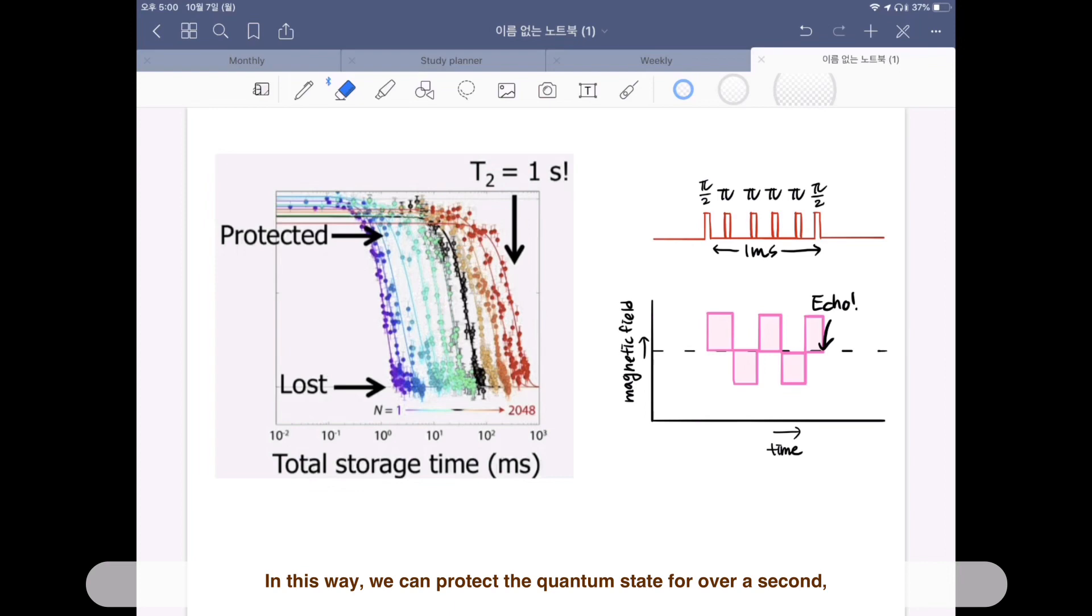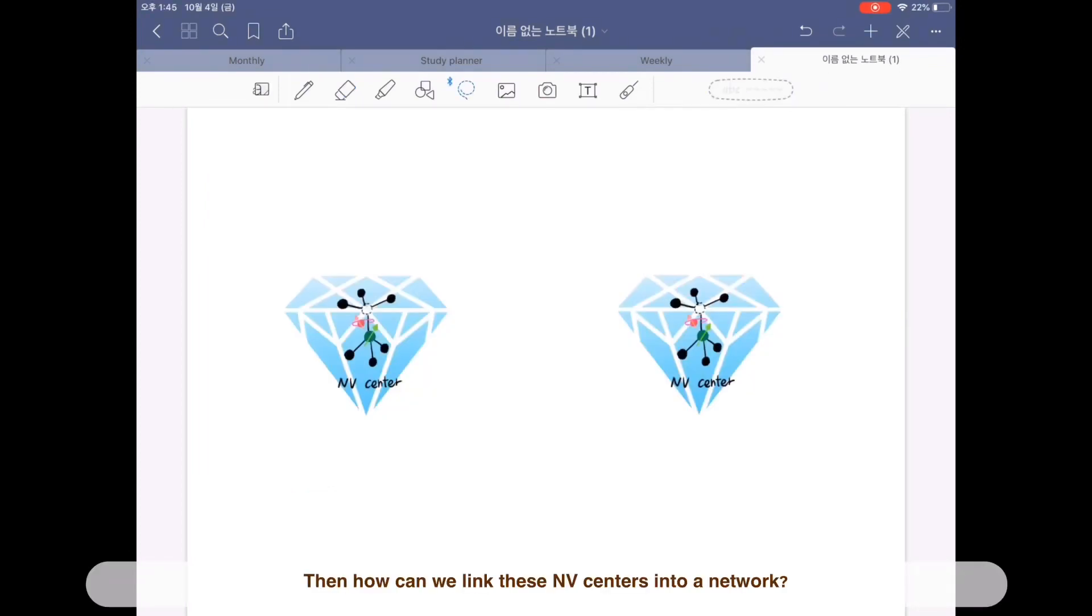In this way, we can protect the quantum state for over a second and even over macroscopic scales about 6 orders of magnitude better than without flipping the electron. Thus, we have good coherence for the electron spin. Then how can we link these NV centers into a network?